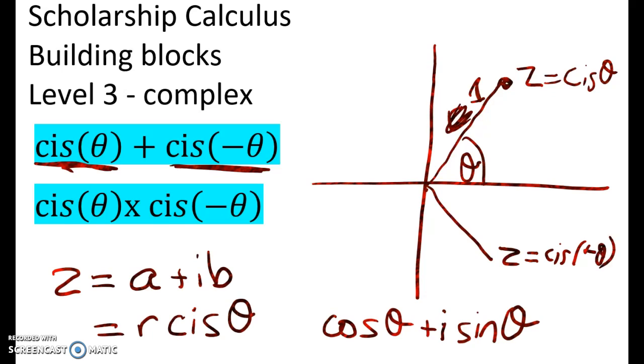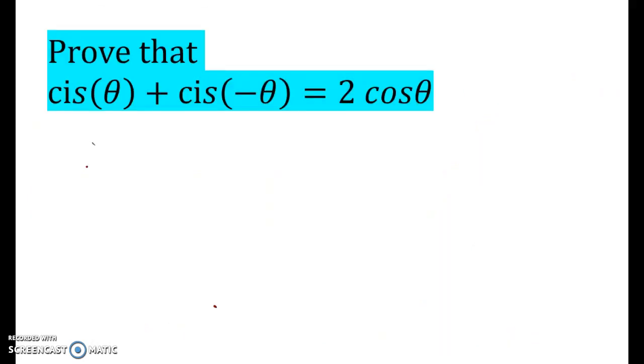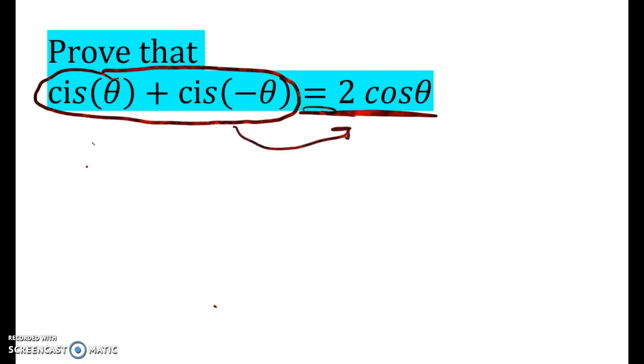So if you were doing a Level 3 question, you'd probably be asked to do something like this: Prove that cis theta plus cis of negative theta equals 2 cos theta. And we're going to do that now. But if you were doing a scholarship problem, you might come to a point where you had this hidden in a big messy answer. And if you know that that can simplify into just 2 cos theta, which is a real number, not a complex number, that might help you.